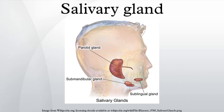Unlike the other two major glands, the ductal system of the sublingual glands does not have intercalated ducts and usually does not have striated ducts either, so they exit directly from 8 to 20 excretory ducts. Approximately 5% of saliva entering the oral cavity comes from these glands.